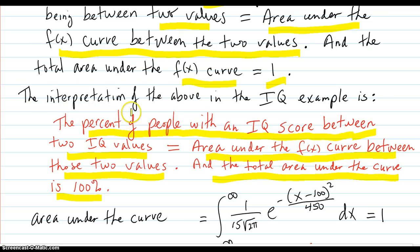So say that again. The percent of people with an IQ score between two values equals the area under the f(x) curve between those two values, because f(x) was constructed that way.